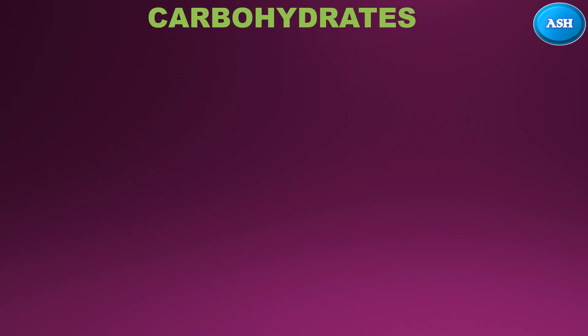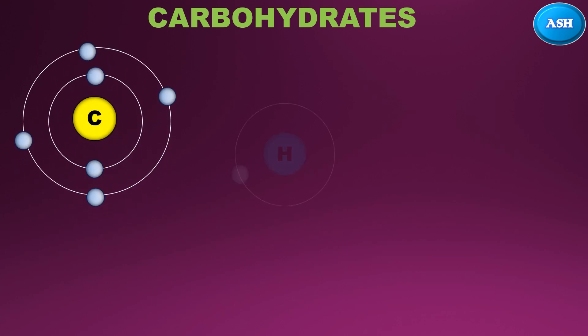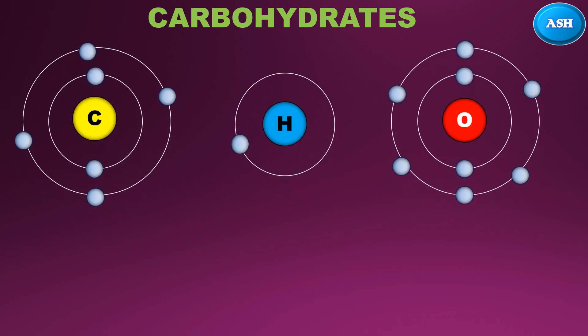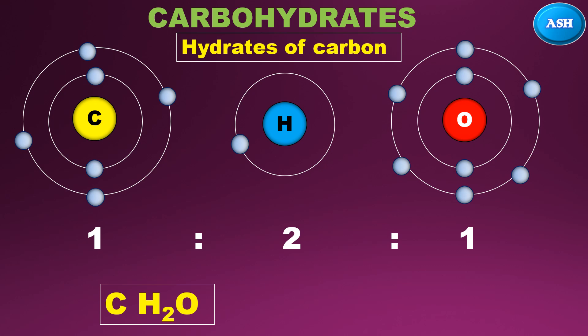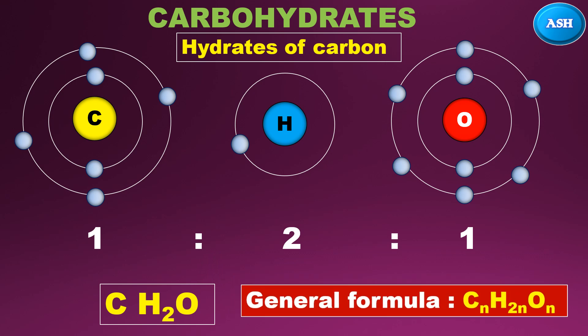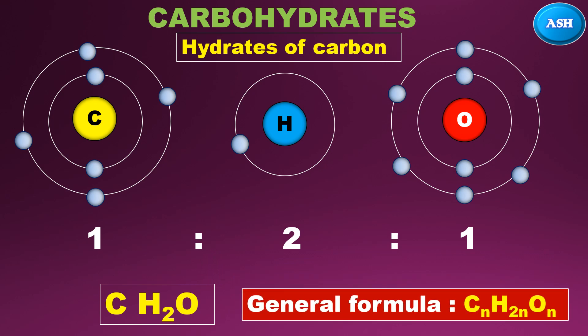Carbohydrates are composed of carbon, hydrogen, and oxygen atoms in the ratio of 1:2:1, that is CH2O, where C represents carbon and H2O is water. So carbohydrates are also known as hydrates of carbon. The general formula is CnH2nOn, where n denotes the carbon number.